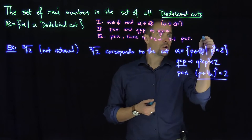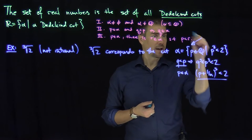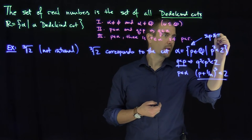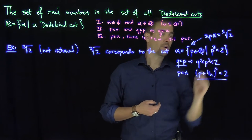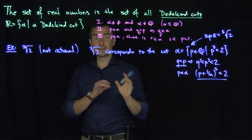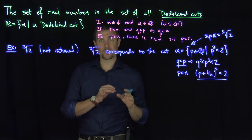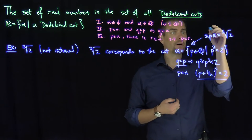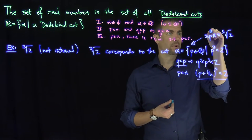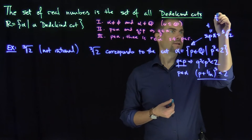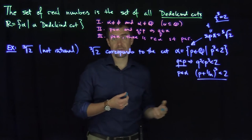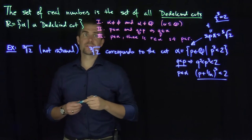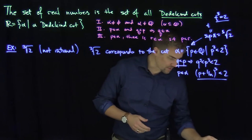So certainly this is a cut. Since this is a cut, we can show the supremum of this set alpha is the third root of two. We will show that R has the least upper bound property, so the supremum exists. More specifically, the supremum of alpha is a number t such that t cubed equals two — it satisfies that definition, and that allows us to build notation for it. So the set of all Dedekind cuts is the set of all real numbers.